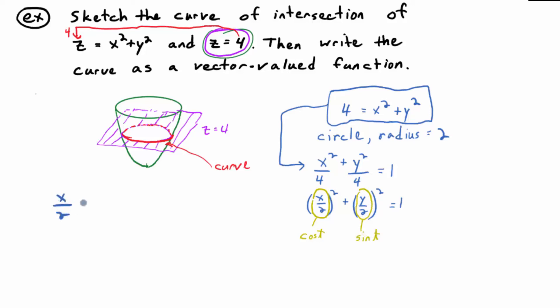So the idea is you could set cosine equal to x over two, cosine of t equal to x over two. Sine of t is y over two. Except let me turn that around. Let me make it y over two equals sine of t.